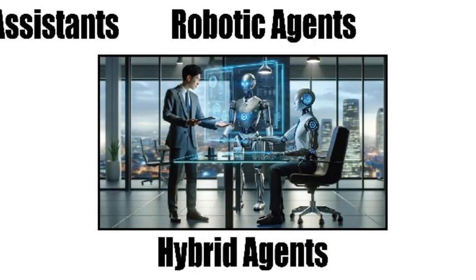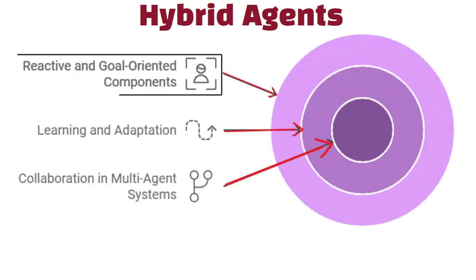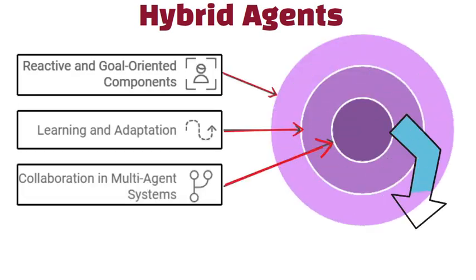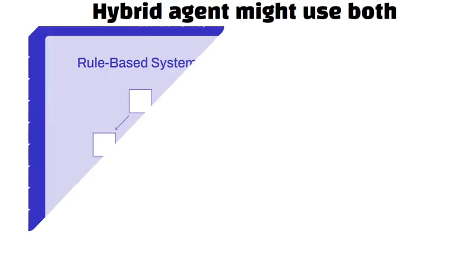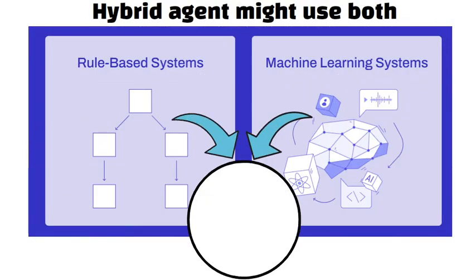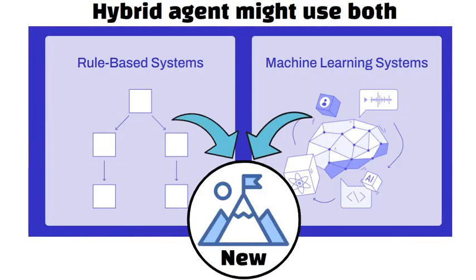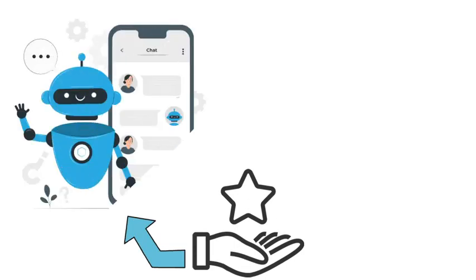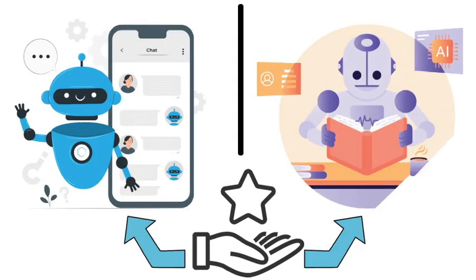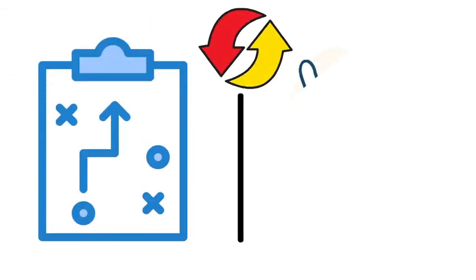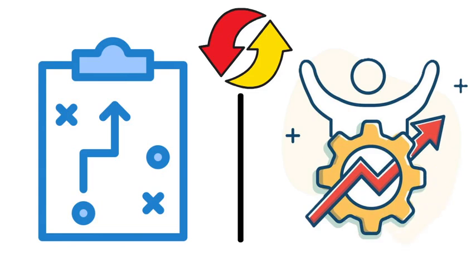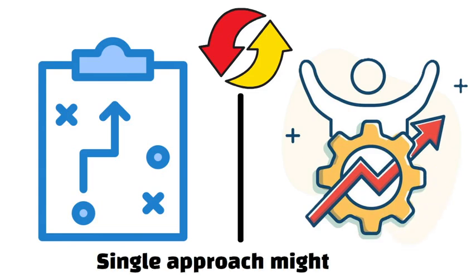Hybrid agents combine elements from different types of AI to create systems that can handle a wide range of tasks. For instance, a hybrid agent might use both rule-based decision-making and machine learning to adapt to new challenges. This approach allows the agent to benefit from the speed of reactive methods and the flexibility of learning techniques. Hybrid agents can switch between strategies depending on the situation, making them particularly robust in complex environments where a single approach might fail.